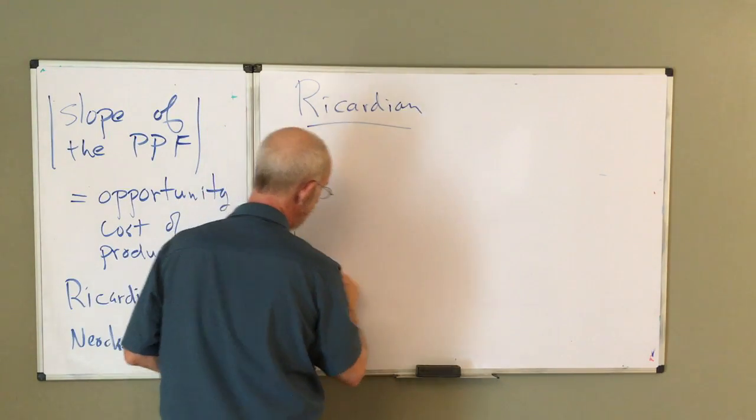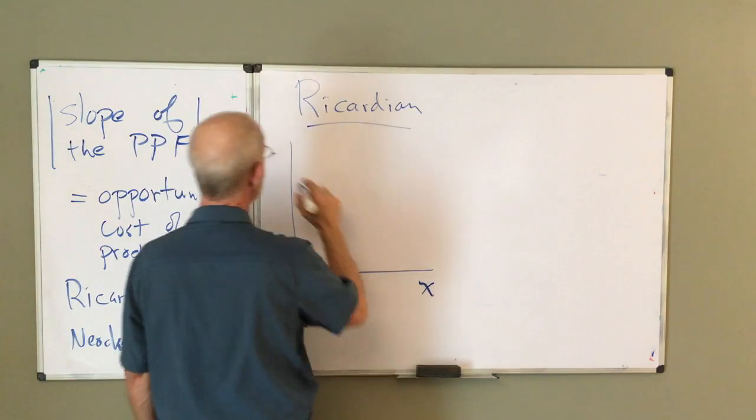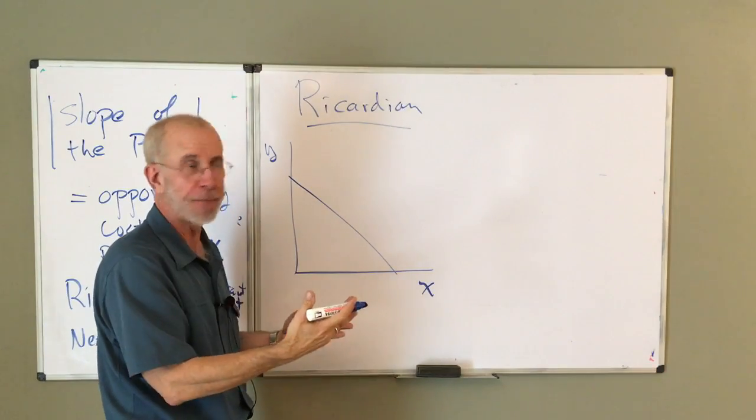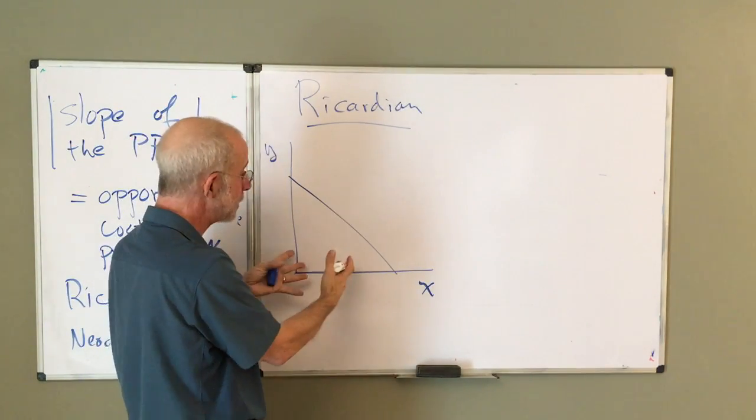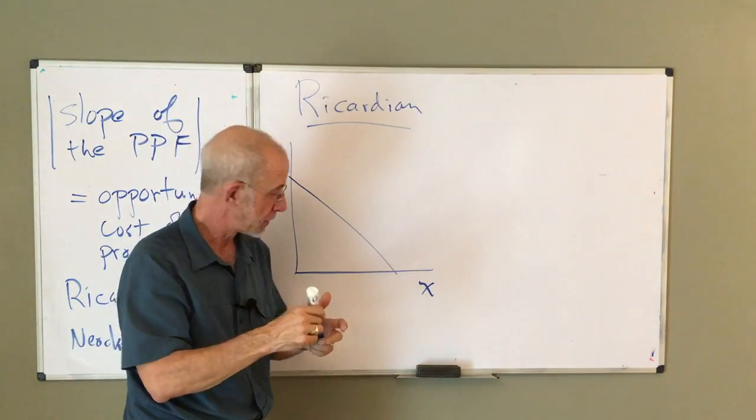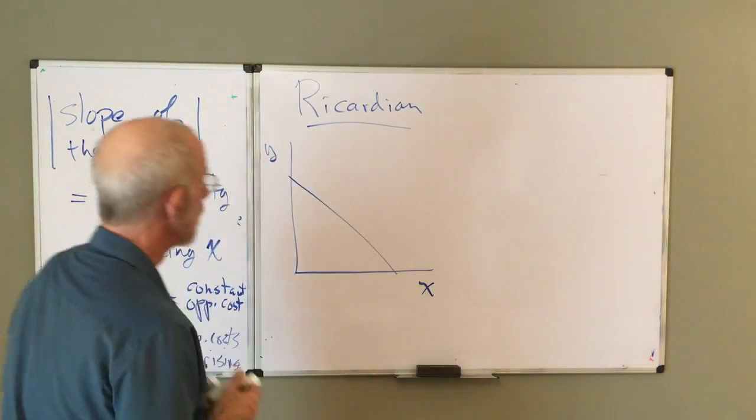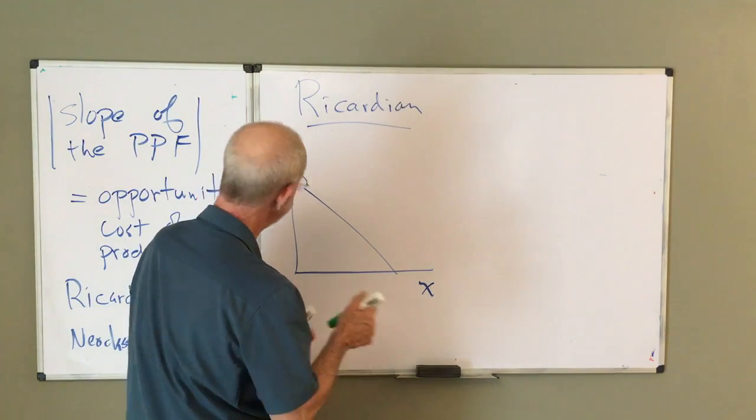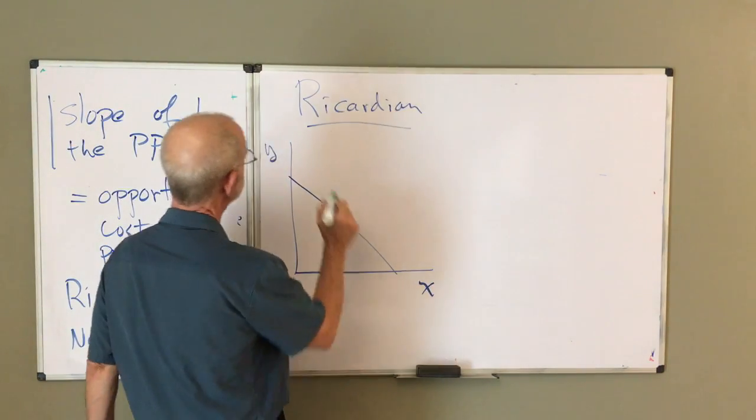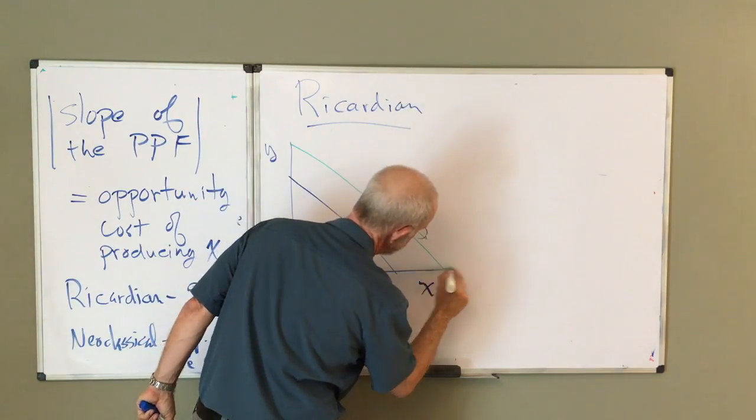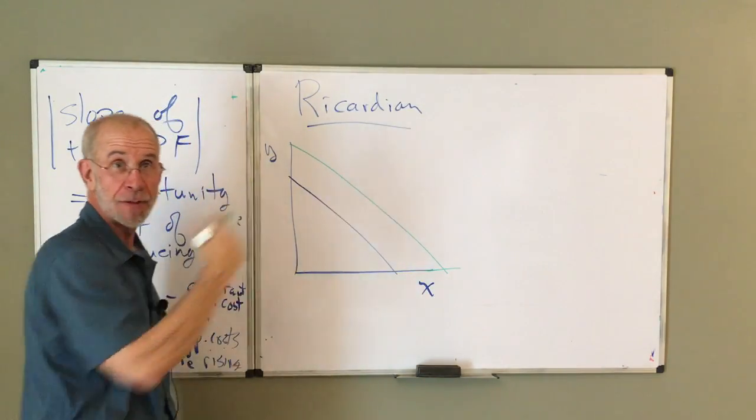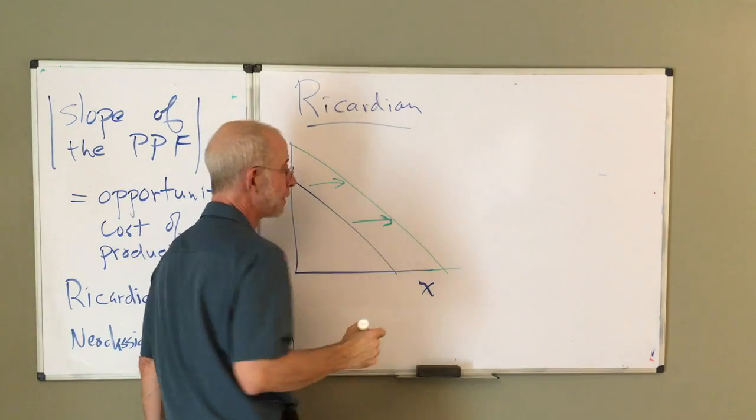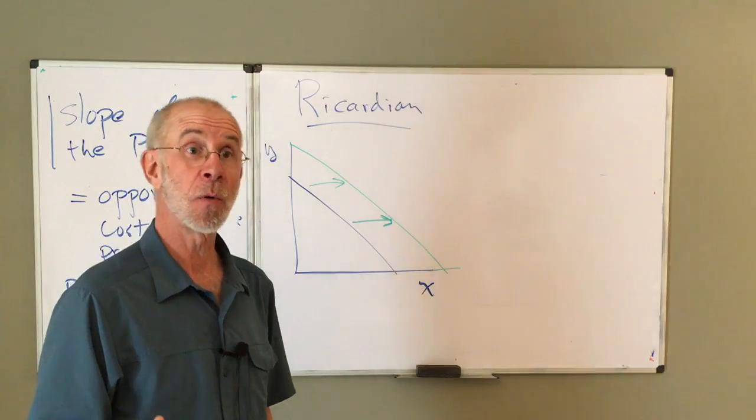Well, let's look at that. This is just a brief introduction to this. We'll go into this in more detail in other places. So, there was the PPF in the Ricardian model for a given technology, for a given amount of labor. If you increase the amount of labor, that PPF shifts out.